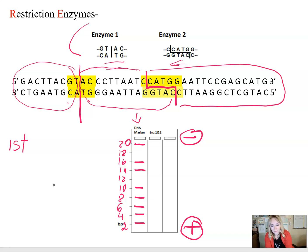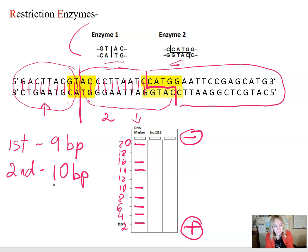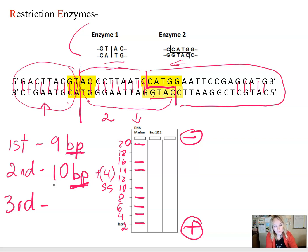The very first fragment: we count the base pairs — 1, 2, 3, 4, 5, 6, 7, 8, 9 — that's 9 base pairs. The second fragment: 1, 2, 3, 4, 5, 6, 7, 8, 9, 10 — so 10 base pairs. Notice we also have a single-stranded overhang of 4 single-strand bases, which we can ignore since we're just looking at base pairs. The third fragment: 1, 2, 3, 4, 5, 6, 7, 8, 9, 10, 11, 12, 13, 14 — that's 14 base pairs, and again we have that overhang which we can ignore.